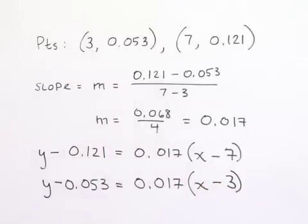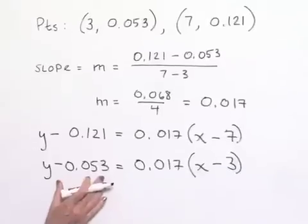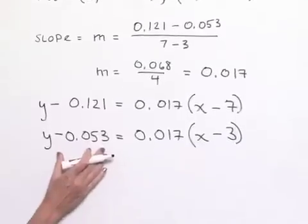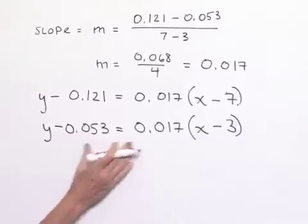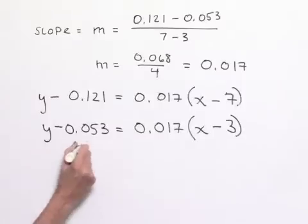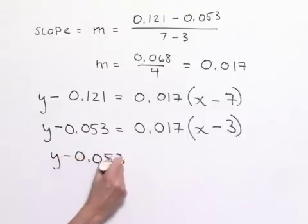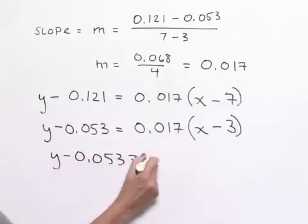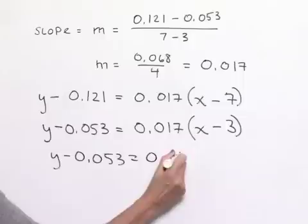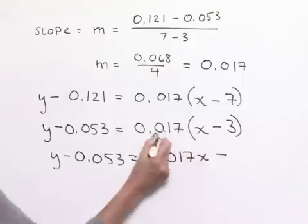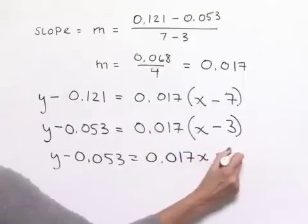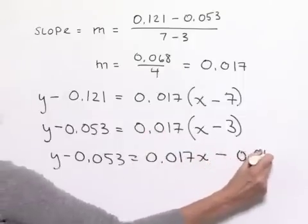In part B of the problem, we're asked to find the slope-intercept form of the equation. We can take this format and solve for y in order to come up with the slope-intercept form. Let's go ahead and use the last equation I've written. We have, multiplying out, y minus 0.053 equals, we're going to use distributive property, 0.017x minus, multiplying here times 3, we end up with 0.051.